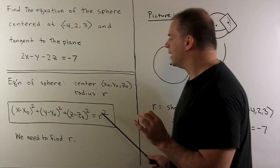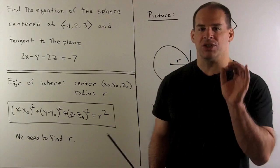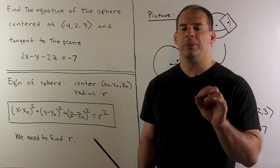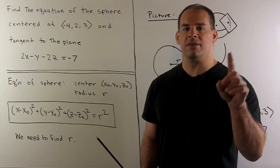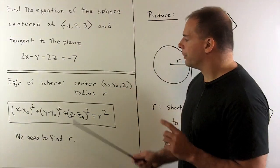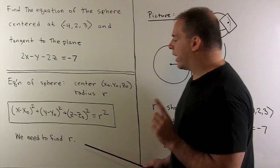So what I have here is the set of all points distance r from the point (x₀, y₀, z₀). If we take all those points, that gives us a sphere. Now we're given the center, so we're looking for the radius.